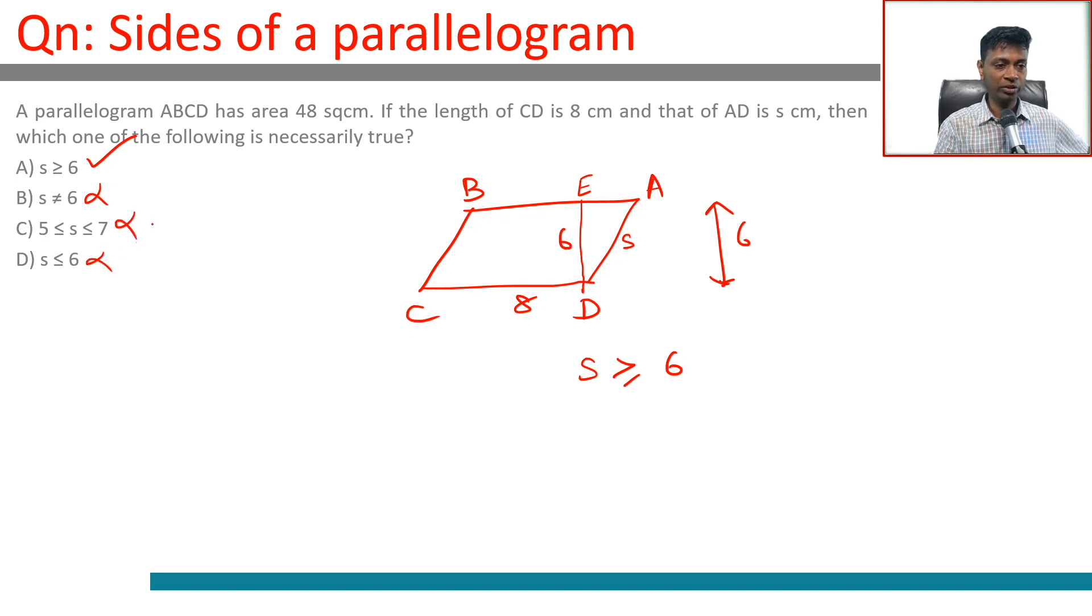This is it. Base times height is area. The height is 6, which means the side should be at least 6. If this were a rectangle, s would be 6. Otherwise it would be greater than 6.